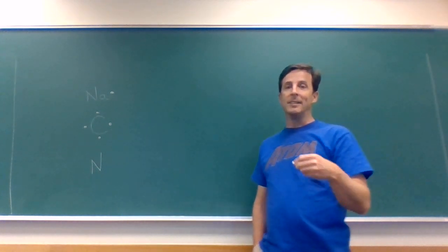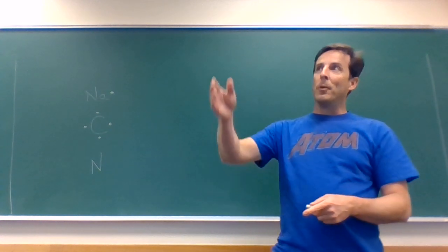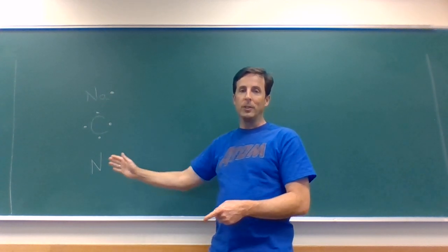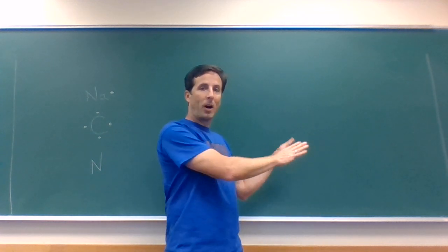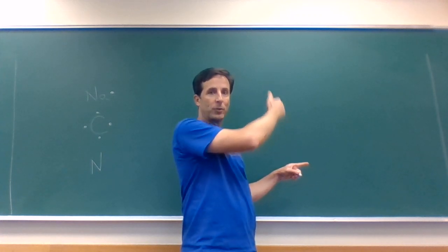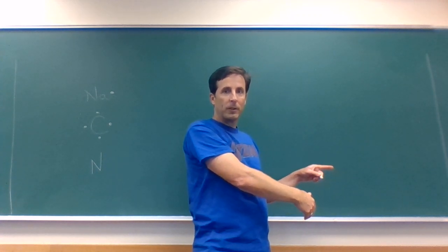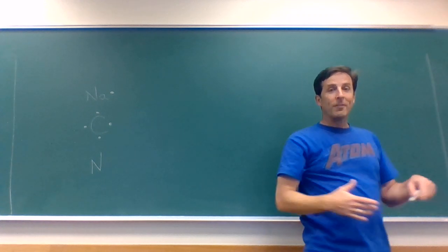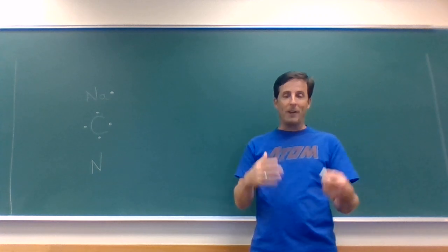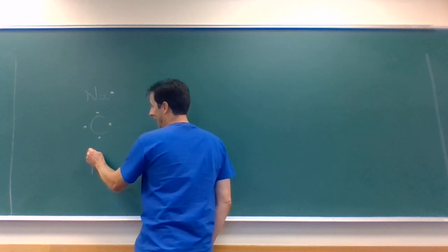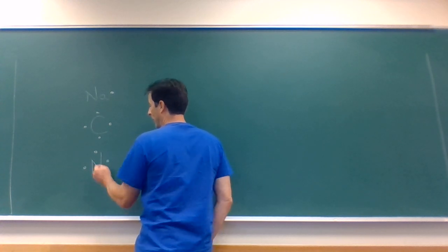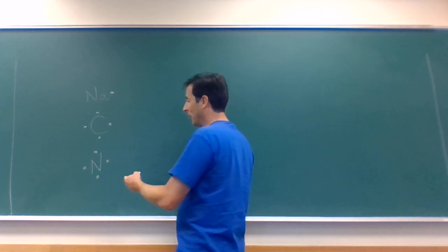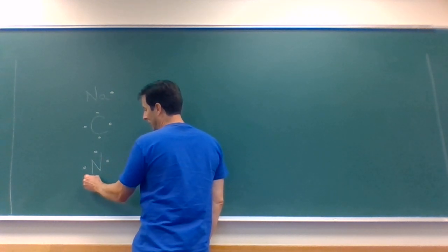If I go to nitrogen, I put the symbol N — it has five valence electrons. The shortcut is to look at the periodic table: groups 1 and 2 are the alkali and alkaline earth metals, then we jump over the transition metals to the p-block. Aluminum is group 3, carbon is group 4, nitrogen is group 5, oxygen is group 6, halogens are group 7, and noble gases are group 8. Whatever group you're in, that's how many dots you put. Nitrogen is group 5, so it gets five dots — the first four go separately, and the fifth one has to pair up.